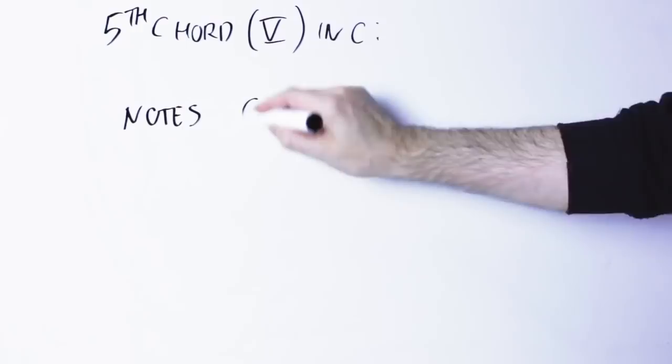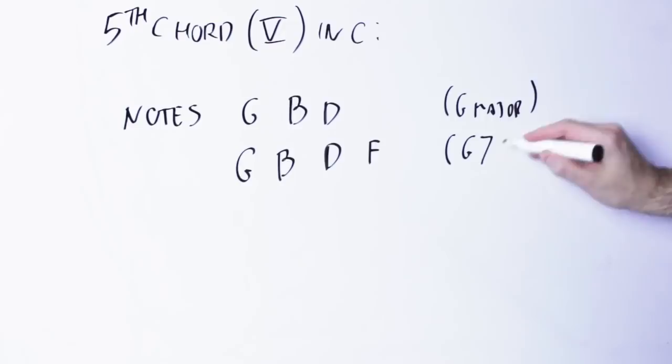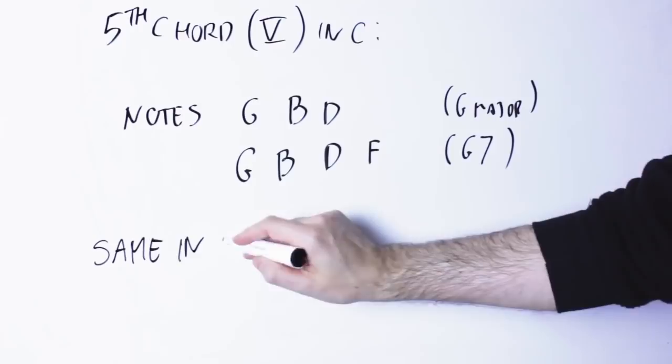Now, in the C major key, this chord can be made by the notes G, B and D, or G, B, D and F. In the C minor key, the chord happens to have the exact same notes: G, B and D, or G, B, D and F.